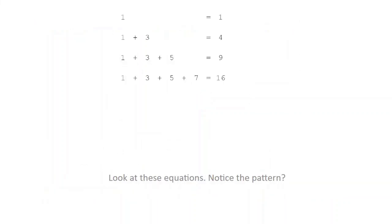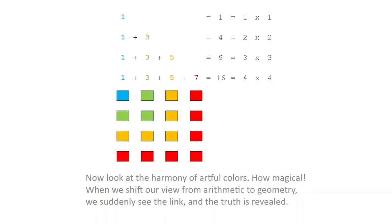Look at these equations. Notice the pattern? Why adding odd integers give us squares? Now look at the harmony of artful colors. How magical. When we shift our view from arithmetic to geometry, we suddenly see the link, and the truth is revealed.